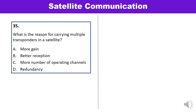Question 35: What is the reason for carrying multiple transponders in a satellite? To be economically feasible, a satellite must be capable of handling several channels. Therefore, multiple transponders are carried, and each transponder represents an individual communication channel. The correct answer is more number of operating channels.